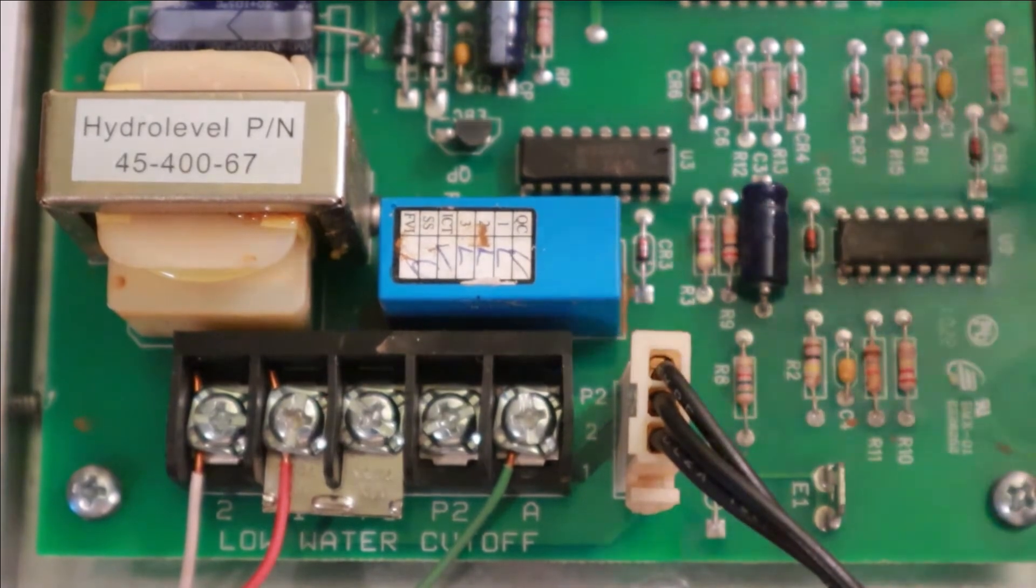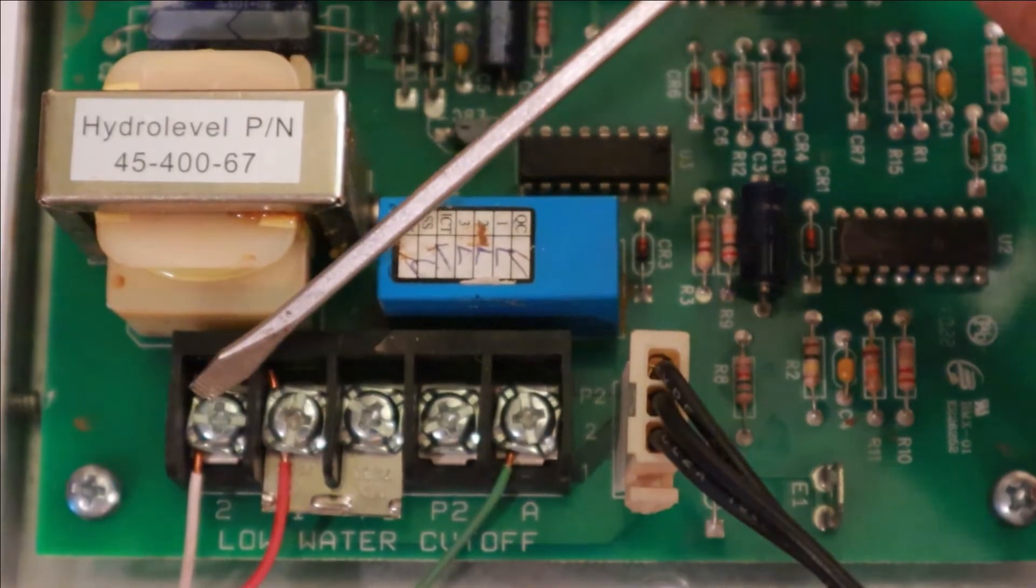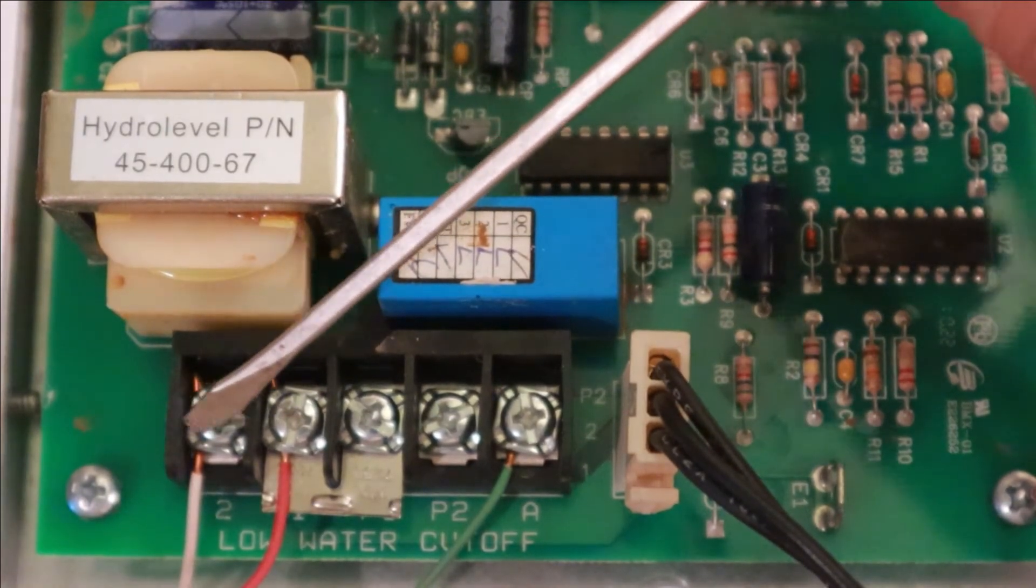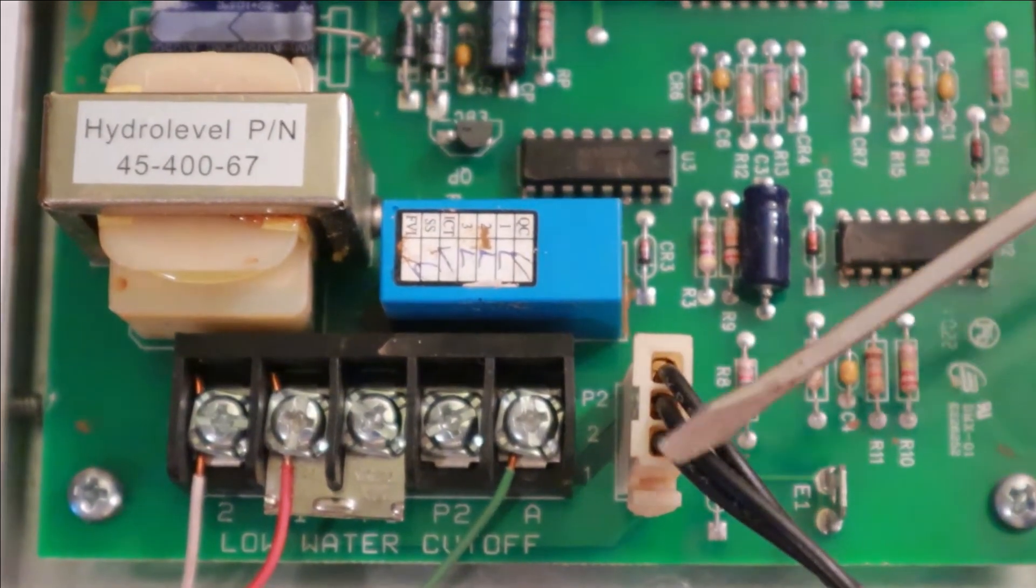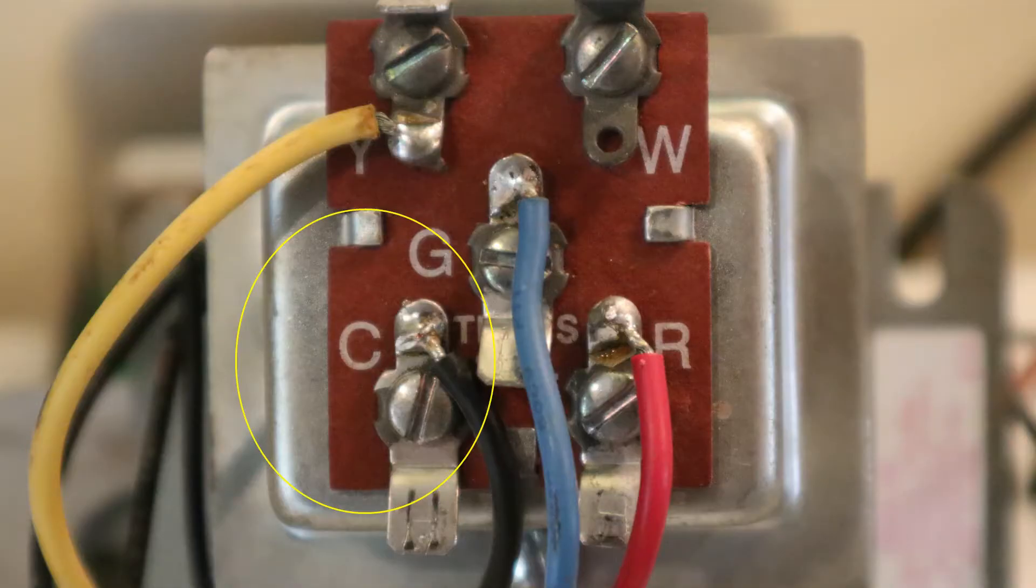Now, these other terminals here, this one and two terminal, that's your hot and your neutral. So that one of those wires will be your neutral coming back, and that actually goes to the C terminal on your transformer or the common.